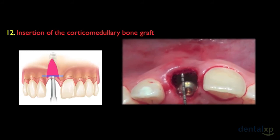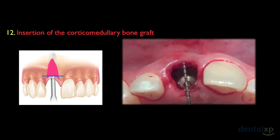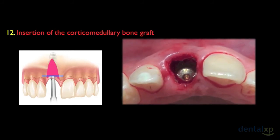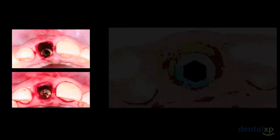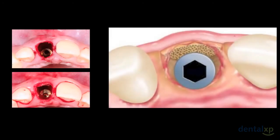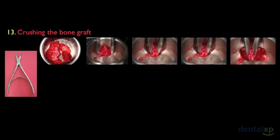Here we are measuring the gap to be filled after insertion of the corticomedullary graft. When the bone graft is left loose behind the soft tissue, we could compromise the result — the tighter it is introduced, the better the result. Here you can see the defect before and after insertion of the corticomedullary graft. Take a look at the juxtaposition of the graft into the defect.